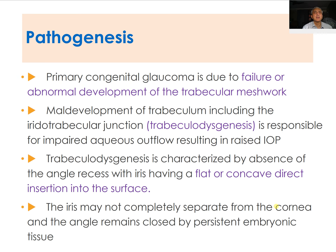The pathogenesis of congenital glaucoma differs from adult glaucoma. In primary congenital glaucoma, it is due to failure or abnormal development of the trabecular meshwork. There is maldevelopment of the trabeculum, including the iridotrabecular junction, which is called trabecular dysgenesis, and this is responsible for impaired aqueous outflow resulting in raised intraocular pressure.